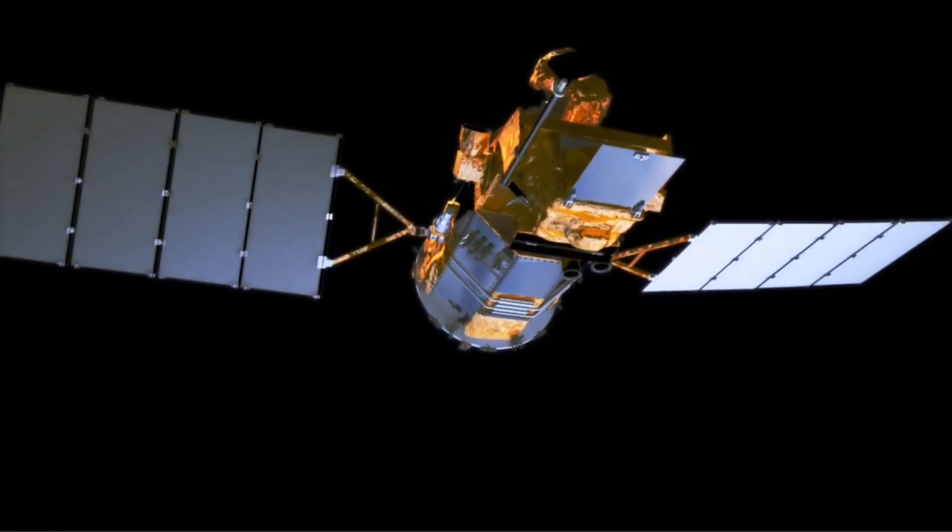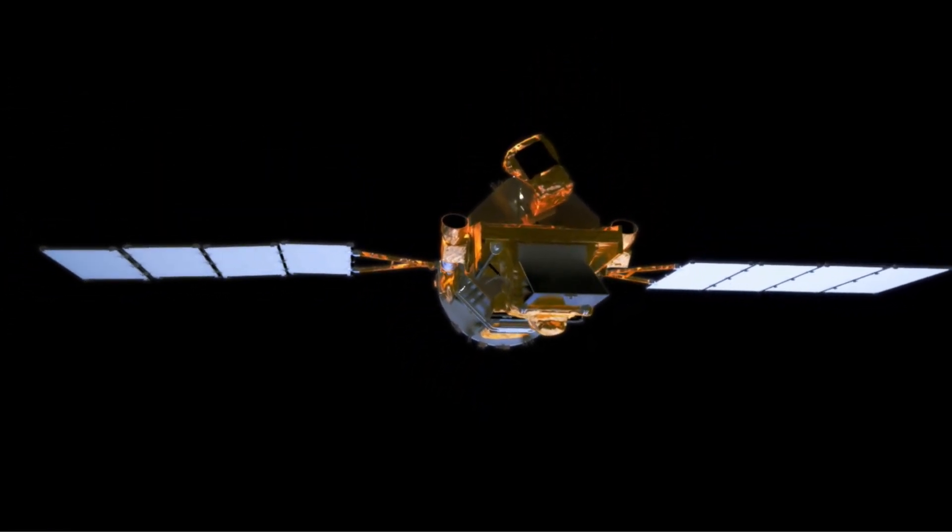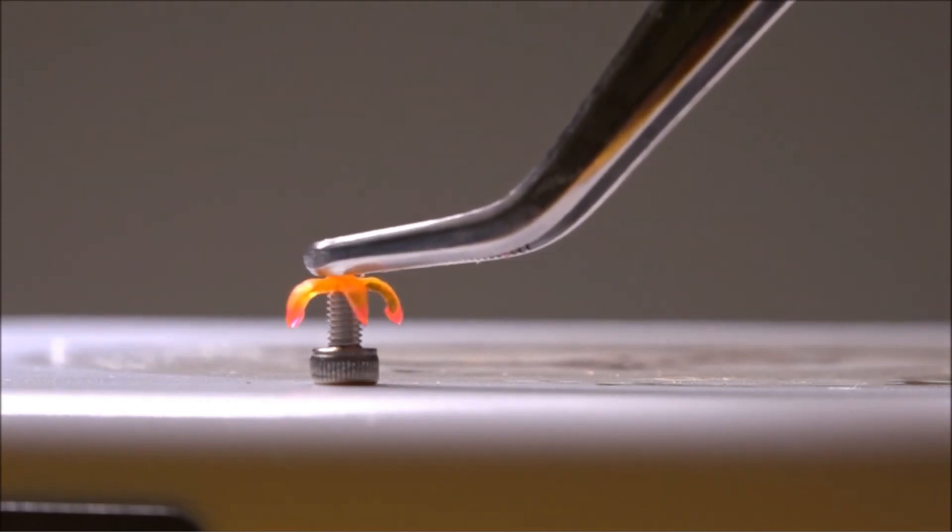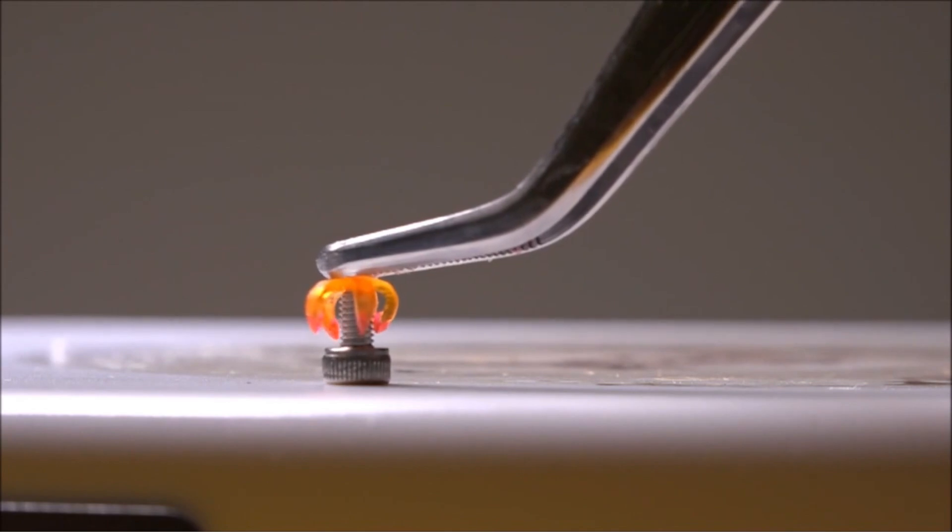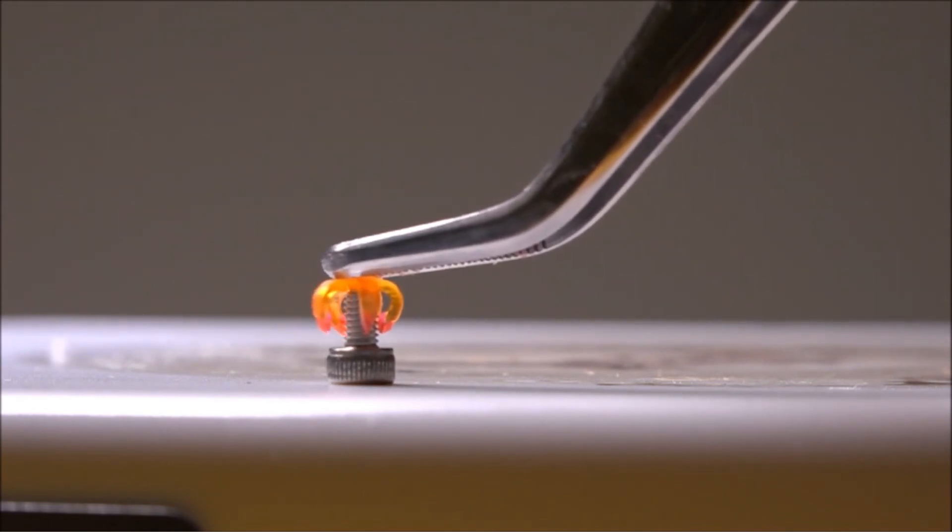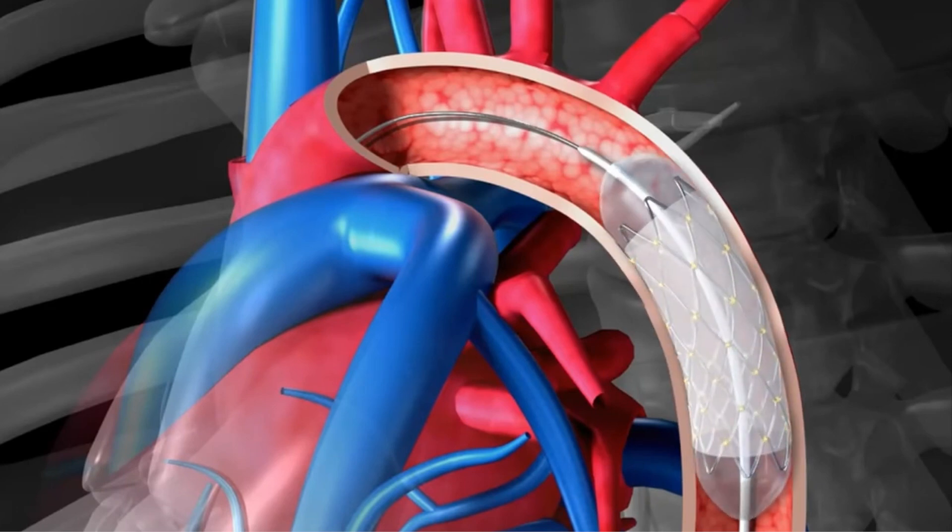In robotics, SMPs can create soft actuators, like robotic fingers, that can shift their shape whenever needed. In biomedical engineering, they can be used in self-expanding stents and drug delivery devices.